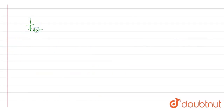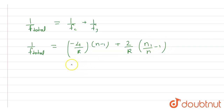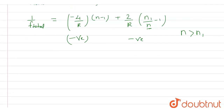The total focal length combines fc and f3: 1/f_total = 1/fc + 1/f3 = −(4/R)(n − 1) + (2/R)(n1/n − 1). The first term is always negative. Since n is greater than n1, the ratio n1/n is less than 1, so (n1/n − 1) is also negative. Thus both terms are negative, and we need to determine the net magnitude change.